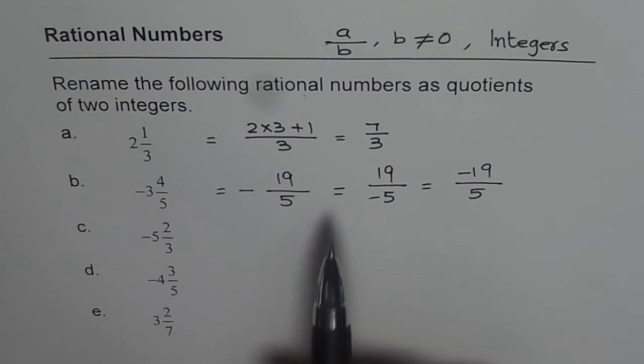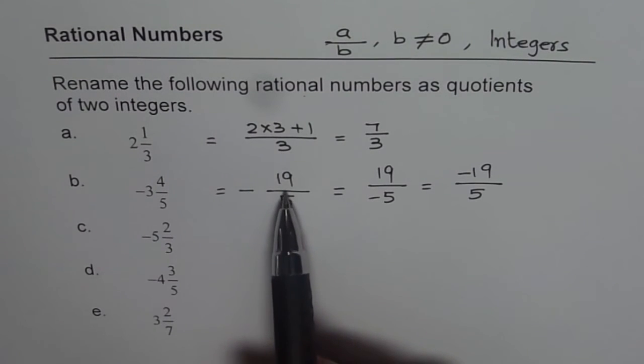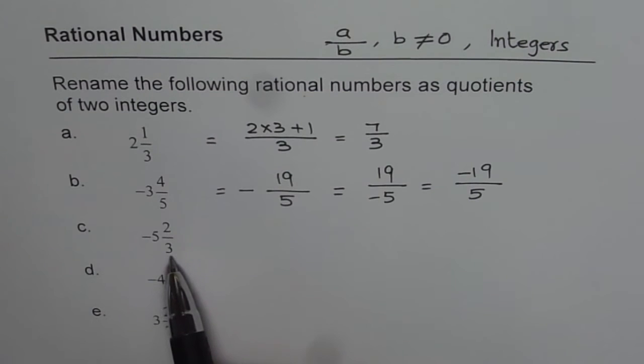I'd like you to follow that process. When you have to convert them into rational numbers, multiply the whole with the denominator, add the numerator—that becomes the new numerator—and the denominator is unchanged.